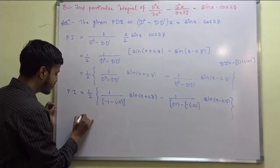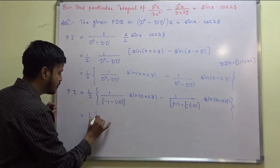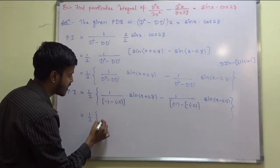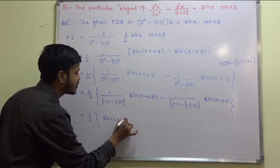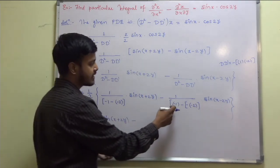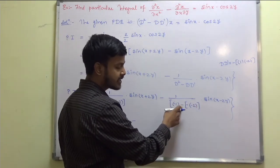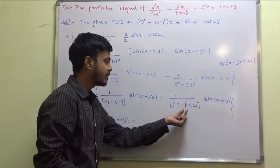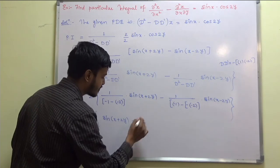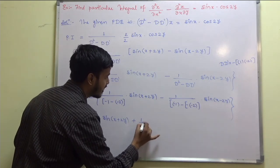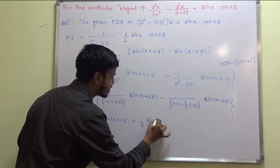Now just write down, this is 1 by 2. What is minus 1 plus 2 is plus 1. So this is sine of X plus 2Y minus. This is minus minus plus and this is minus. Minus 1 minus minus 3, and this is 1 by 3 sine of X minus 2Y.